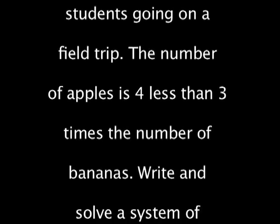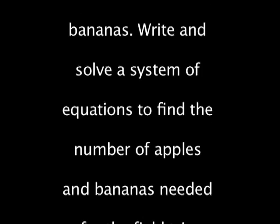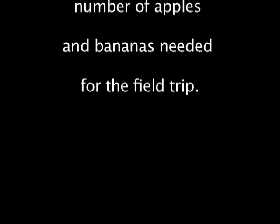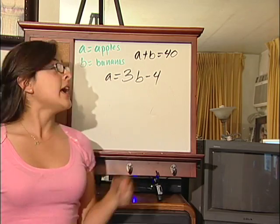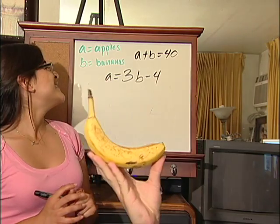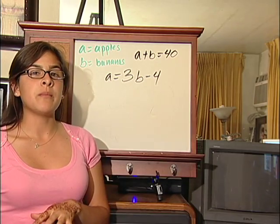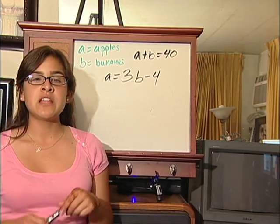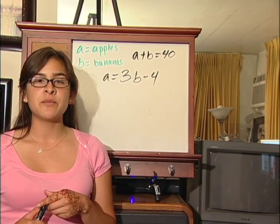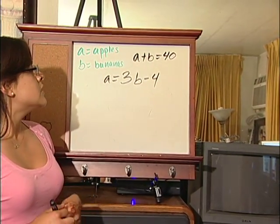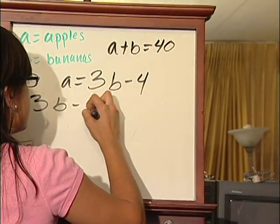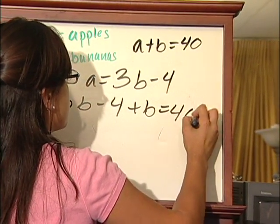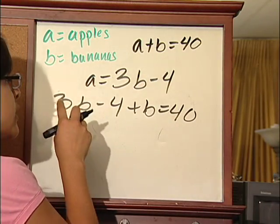There are 40 students going on a field trip. The number of apples is 4 less than 3 times the number of bananas. Write and solve a system of equations to find the number of apples and bananas. We need two variables: a for apples and b for bananas. We can write a plus b equals 40 as the total fruit needed. Since apples is 4 less than 3 times bananas, we set a equals 3b minus 4. Plugging in gives 3b minus 4 plus b equals 40. Combining like terms and moving negative 4 to the other side gives us b equals 11.